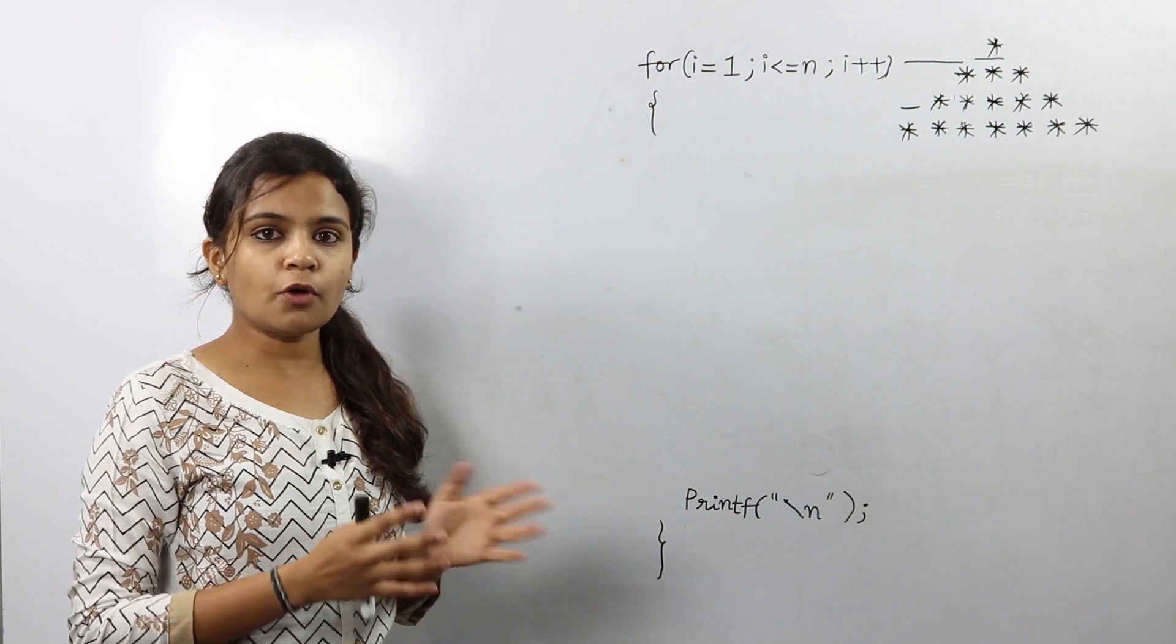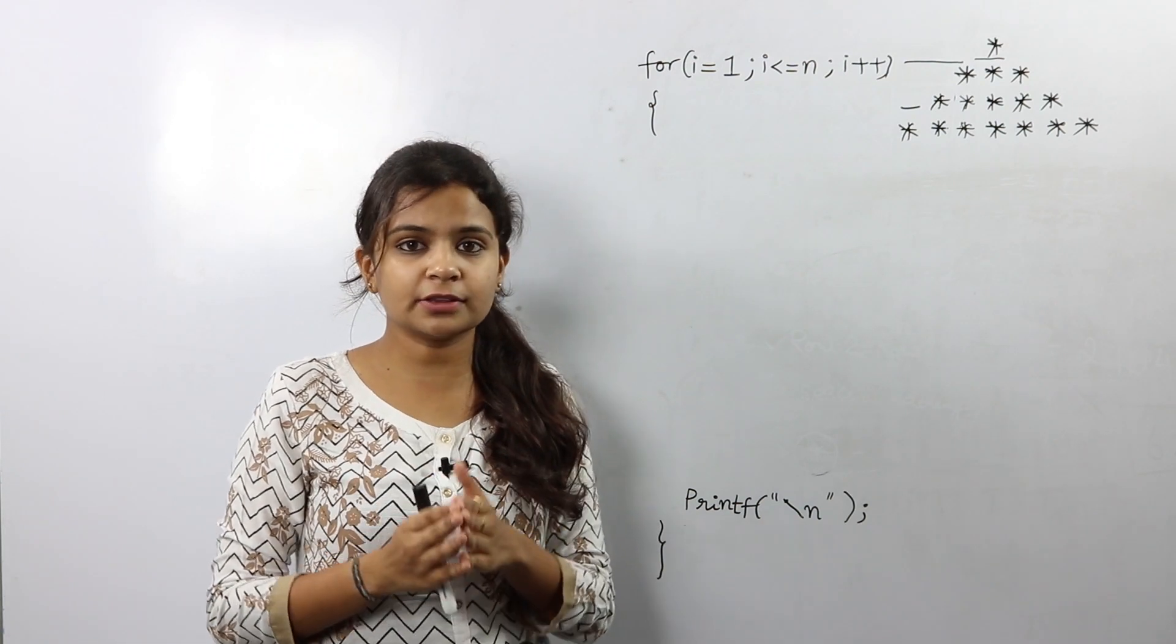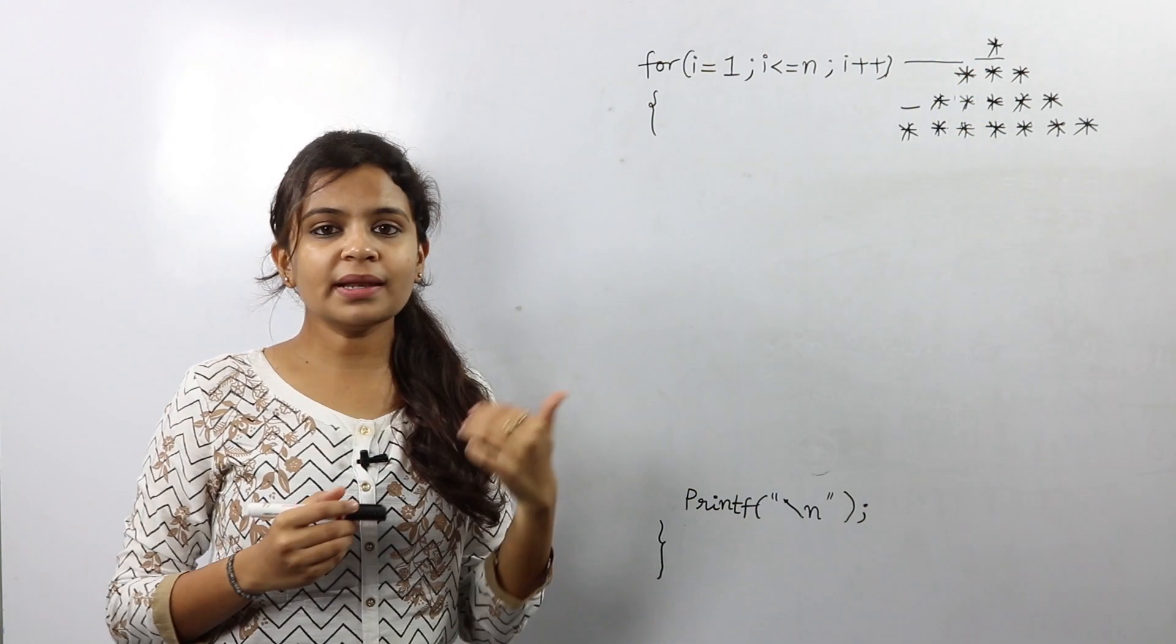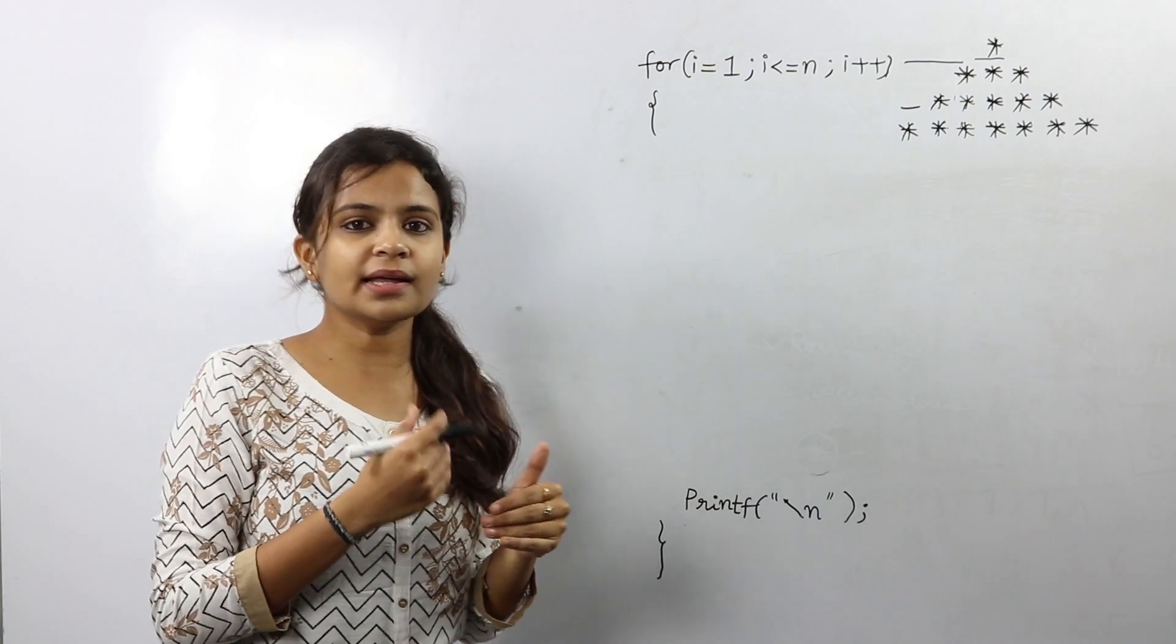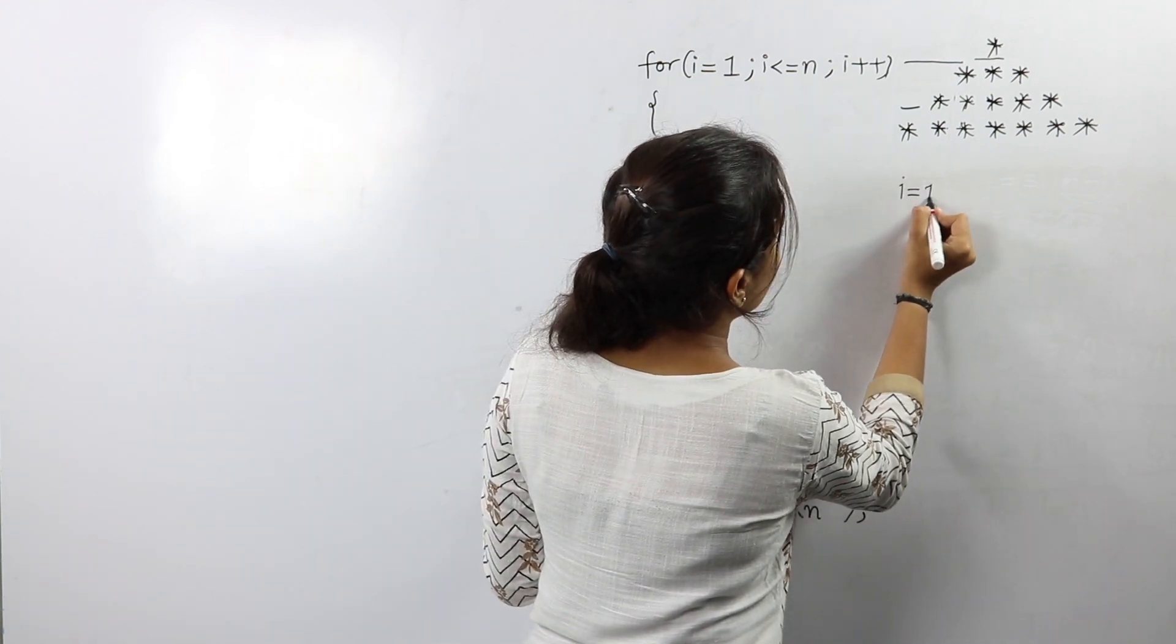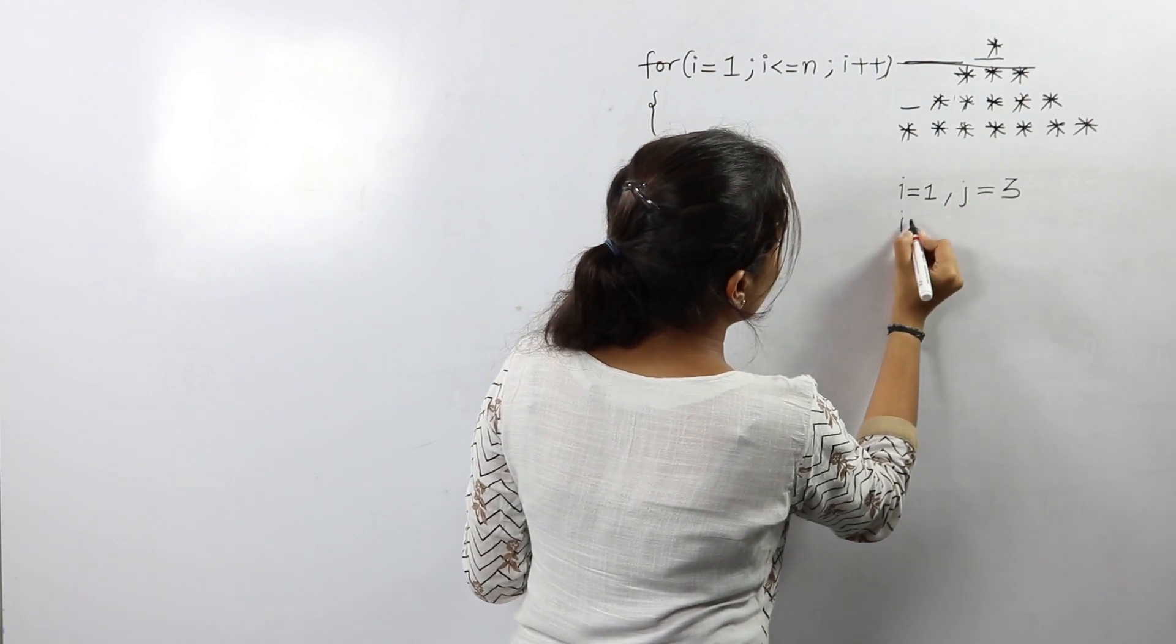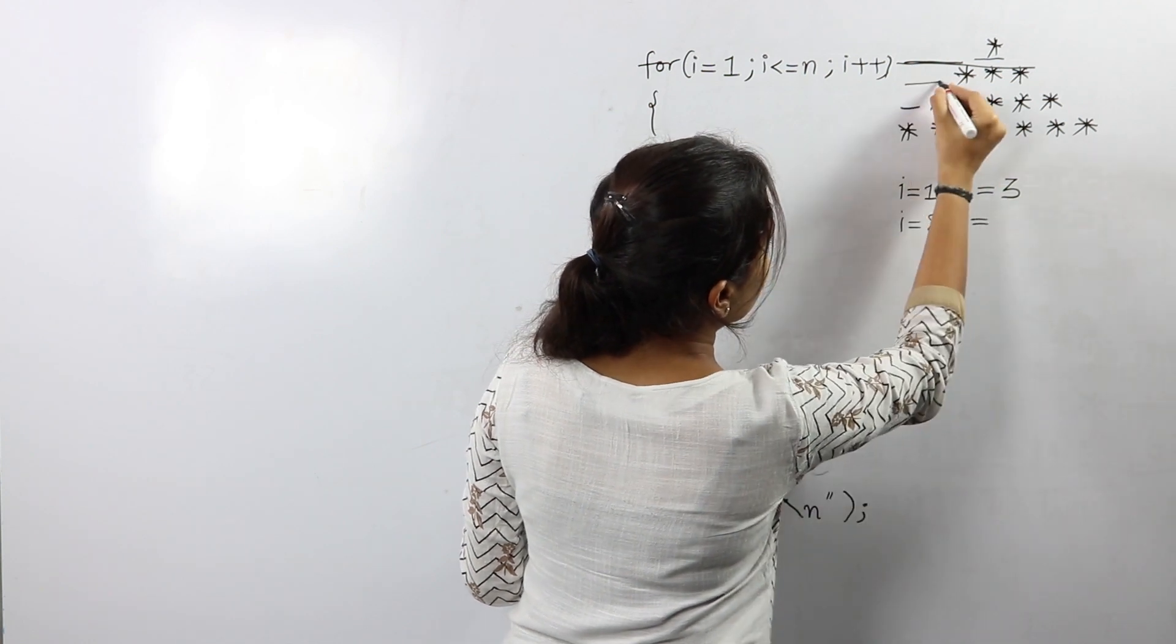So since our outer for loop is done, now let's get into the inner for loops that is the jth loop which prints the number of spaces required in every single row. So before we write down the logic for the jth loop, let's get into understanding or analyzing it a little bit more. So when i is equal to 1, that is the first row, the number of spaces required are 3. When i is equal to 2, the spaces required are 2.